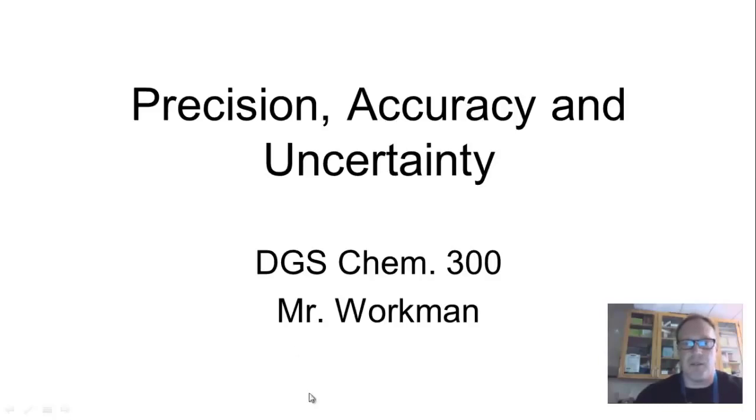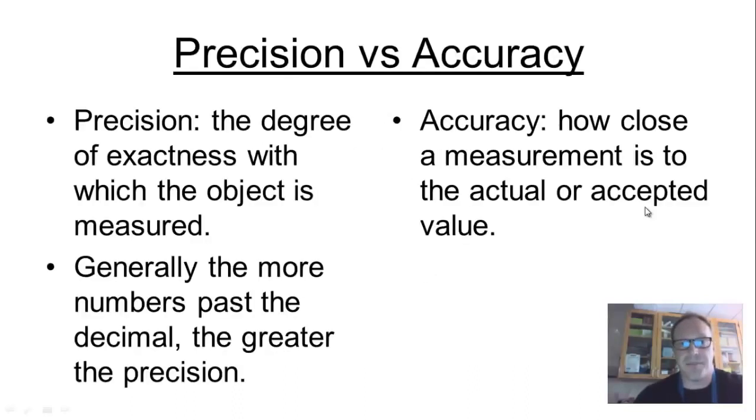Now, something you need to understand, these words precision and accuracy in the world at large are used to mean, many times, one and the same thing, but they're in fact not the same thing. So let's get some definitions down right away. Precision versus accuracy, how are they different?